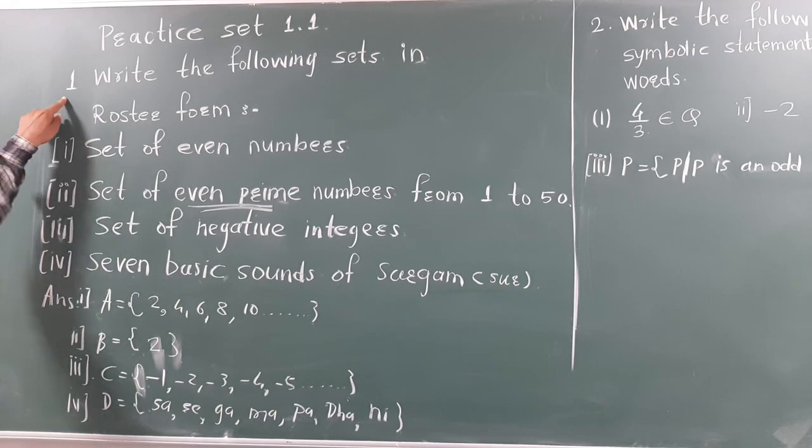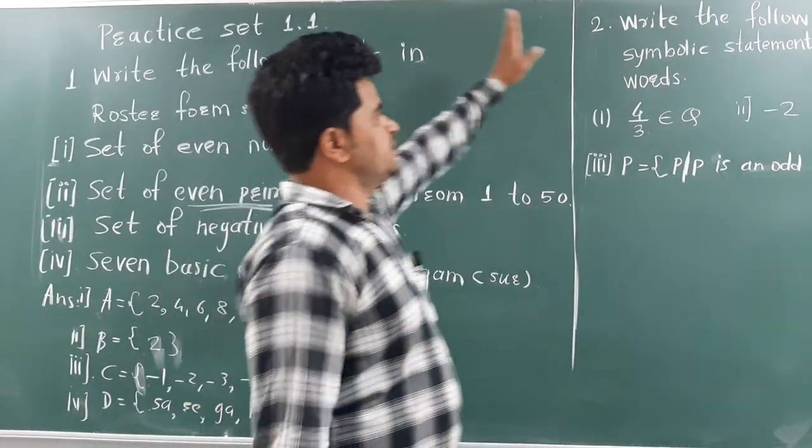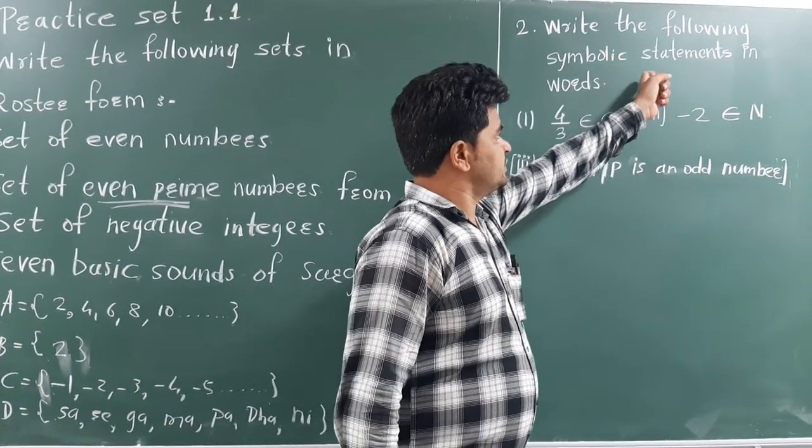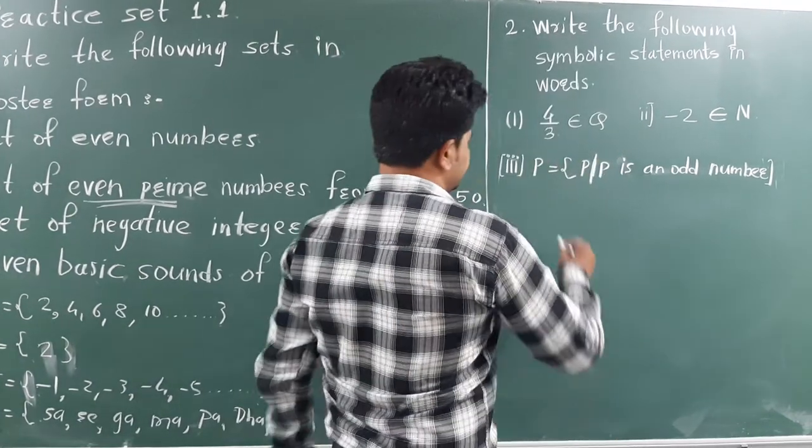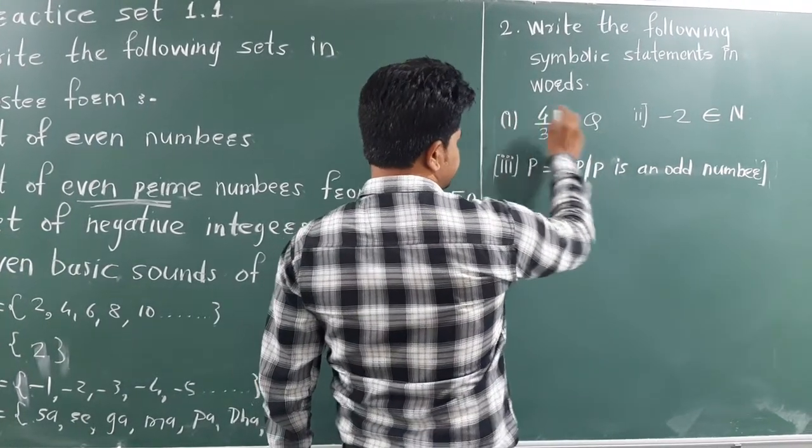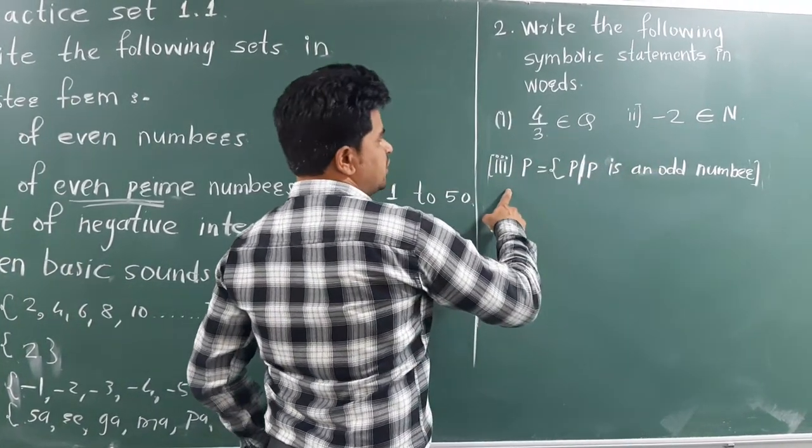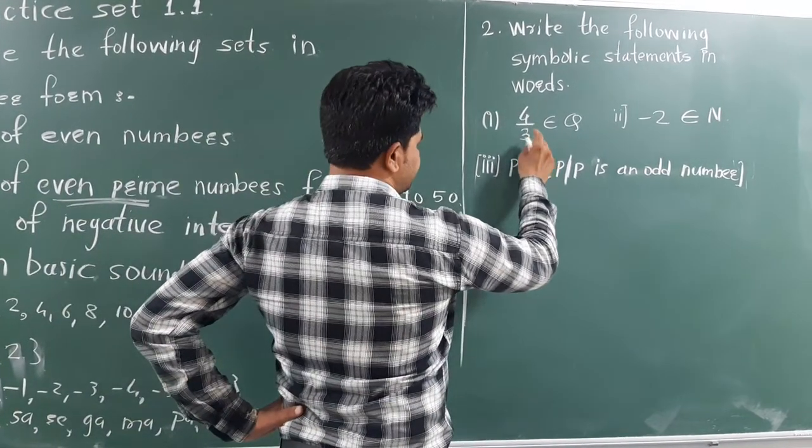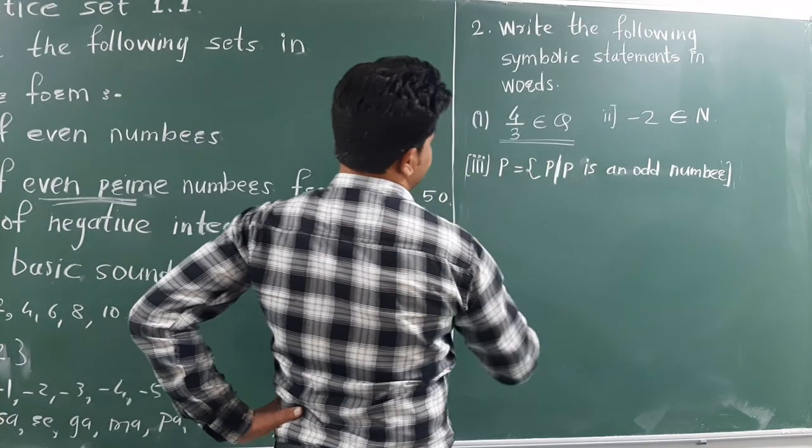Now, we are moving towards the practice set 1.1 second problem. That is, write the following symbolic statement in words. We have given three symbolic statements. This is first, second, and third. We have to write this in statement.